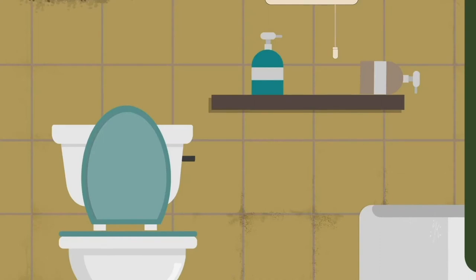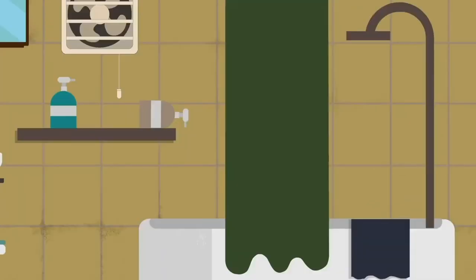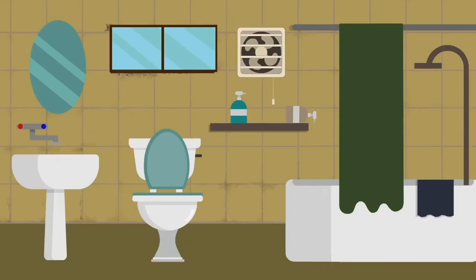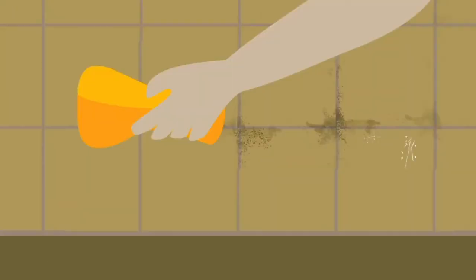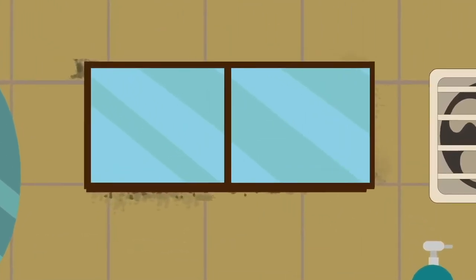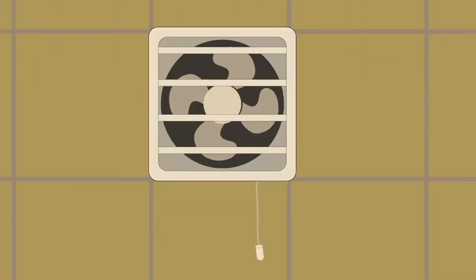Mold is common around bathroom tiles, windows, showers, and sinks. It can be hard to keep these damp places completely free of it, but you can usually prevent this mold from growing by cleaning it regularly and increasing the airflow.